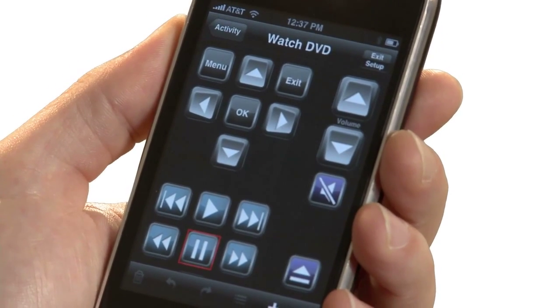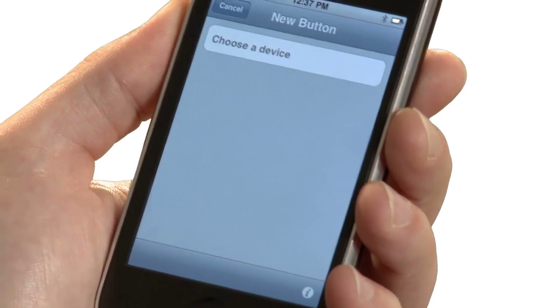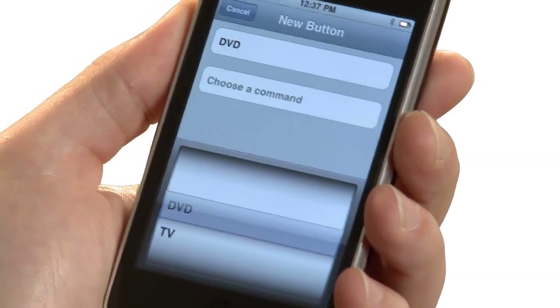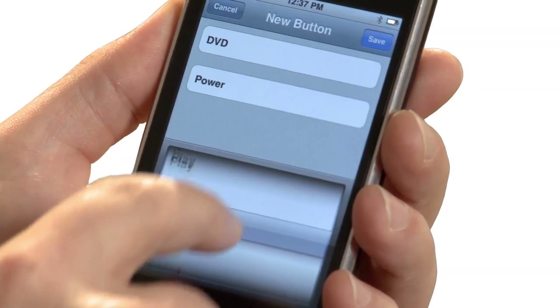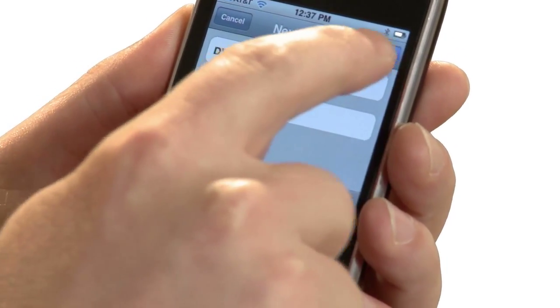RedEye will put together a button layout for you, which you can then customize. For example, I'll add a subtitle button, because I sometimes watch foreign language movies. Tap on the plus icon to add a button. Select the device and the command for the button action. Tap Save.